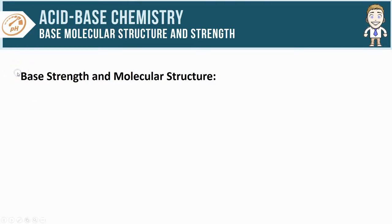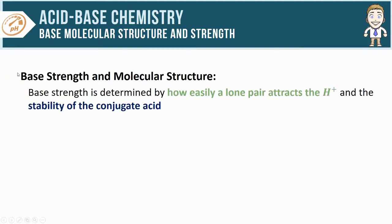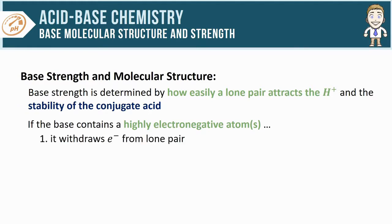A base's strength is determined by two things: number one is how easily does its lone pair attract H plus ions. It's also controlled by the stability of the conjugate acid that's produced. So one thing you're going to look for is if your base contains highly electronegative atoms. If it does, that's going to have an electron withdrawing effect from the lone pair that is in the molecule. Because that lone pair has had electrons withdrawn from it, it's going to be less attractive to any positive ions out there like the H plus, and this means the base will be weaker.